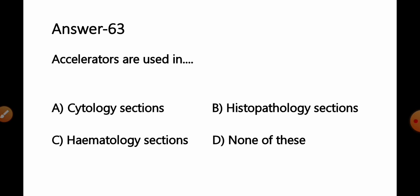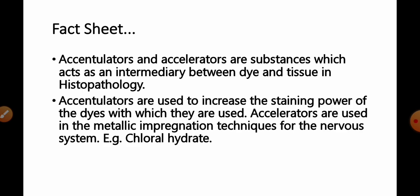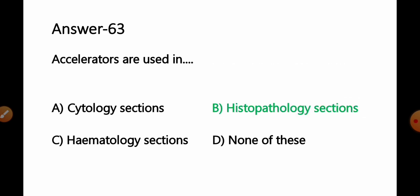Question number 63: Accelerators are used in — option A: cytological sections, B: histopathology sections, C: hematology sections, D: none of these. Accelerators are substances that act as intermediaries between the dye and tissue. They are used to increase the staining power of the dye in metallic impregnation techniques for the nervous system — for example, chloral hydrate. So option B, histopathology sections, is the correct answer.